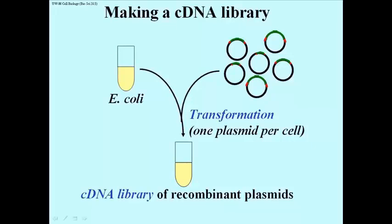Now the issue of course is how do you pick out of that library a clone that has something that you want, that you can clone a lot of? So how do you find, in this case, a globin cDNA clone?